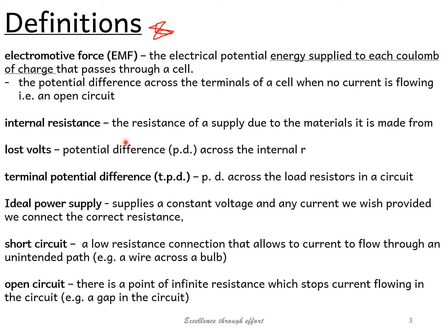Internal resistance is simply the resistance of a supply due to the materials it's made from. Any material used to make the battery has its own resistance, so the battery also has a resistance — called internal resistance, represented by a small 'r' and a small resistor in series with the cell. Lost volts is the potential difference across the internal resistance — this comes up frequently in exams. Terminal potential difference is the potential difference across the load resistors (big R) in a circuit.